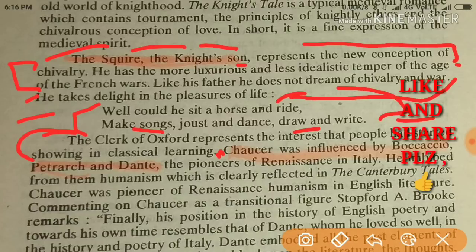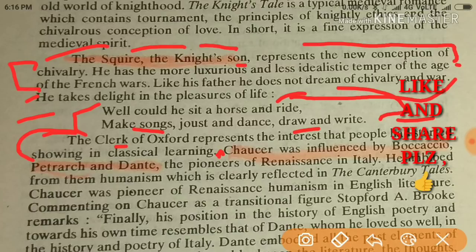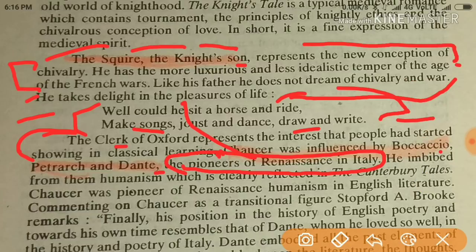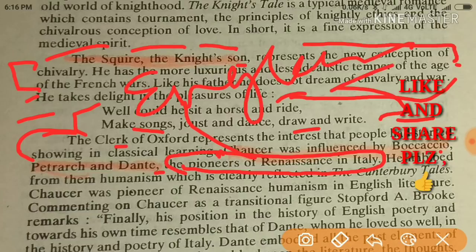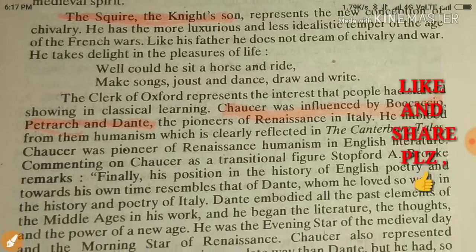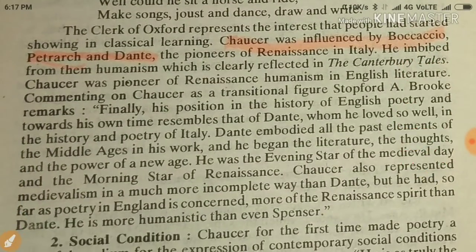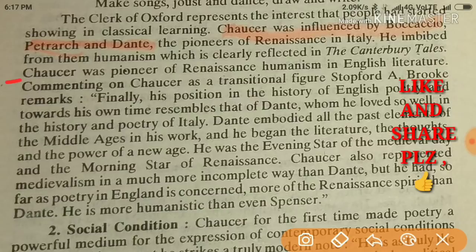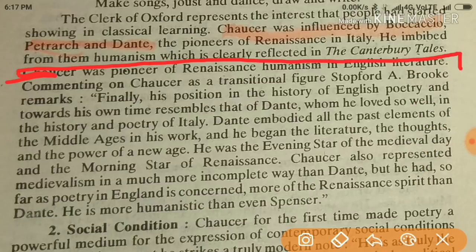At the age of Chaucer, writers were taking inspiration from Boccaccio and Petrarch — all classical writings. Everybody, including Chaucer, was fascinated by classical learning. Chaucer was influenced by Boccaccio and Dante, who were pioneers of the Renaissance in Italy, and you can see their impact on England. He imbibed from them humanism, which is clearly reflected in the Canterbury Tales. Chaucer was a pioneer of Renaissance humanism in English literature.